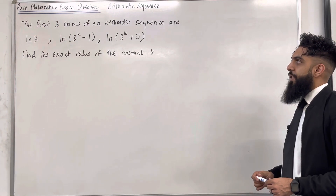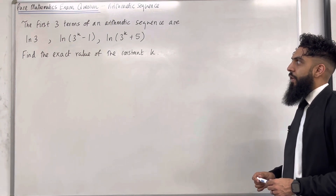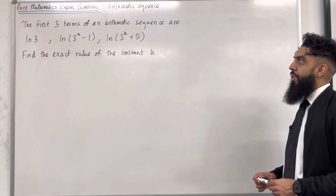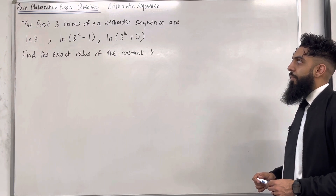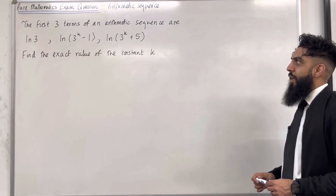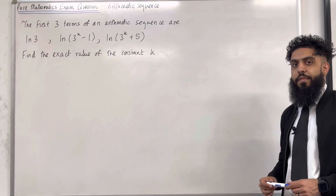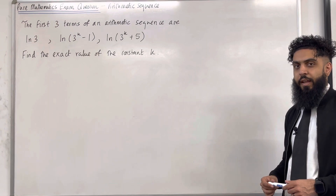The first three terms of an Arithmetic Sequence are ln3, ln(3 to the power k minus 1), and ln(3 to the power k plus 5). Find the exact value of the constant k.